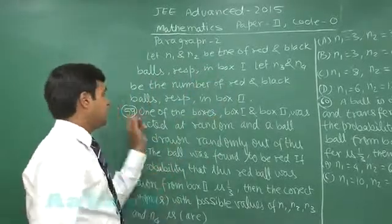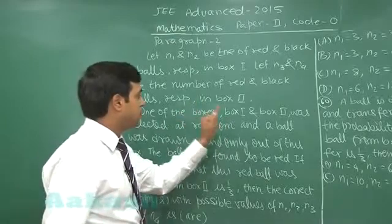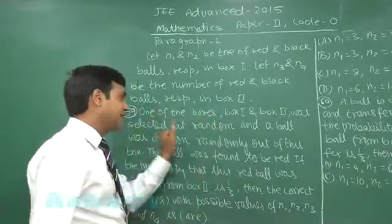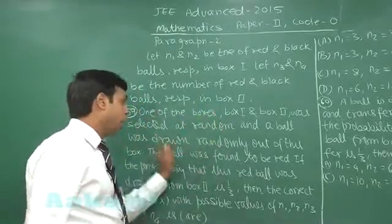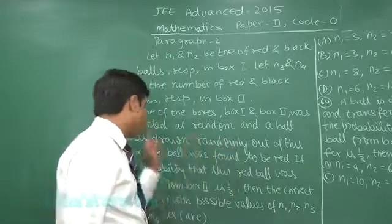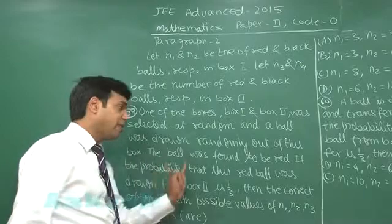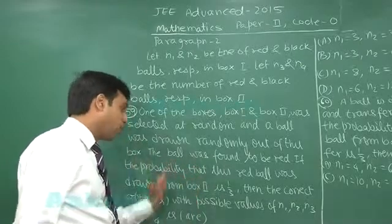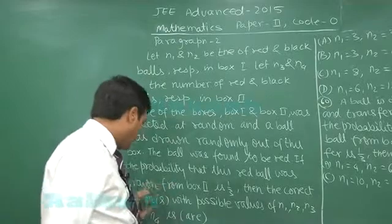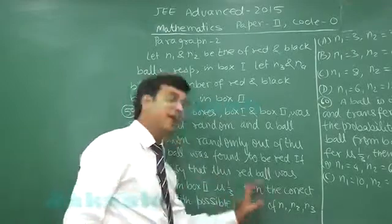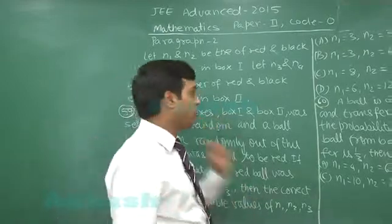Question 59 says: one of the boxes, box 1 and box 2, was selected at random and a ball was drawn randomly out of this box. The ball was found to be red. If the probability that this red ball was drawn from box 2 is 1 by 3, then the correct option with the possible values of N1, N2, N3, and N4.